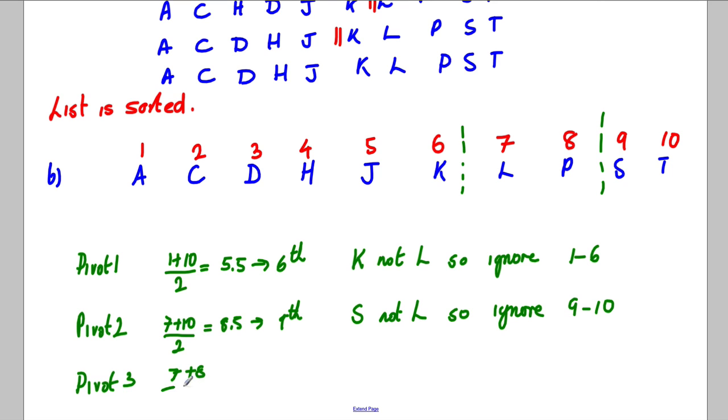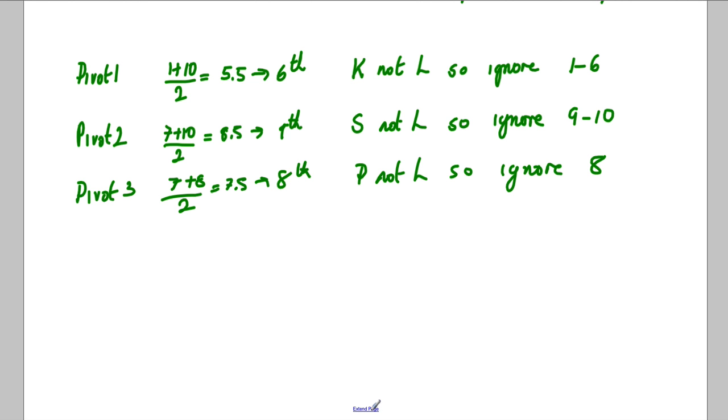So we're just with these now. Pivot three: we're going to do seven add eight divided by two, which is seven point five, which is the eighth person. The eighth is P, not L, so ignore eight. And lastly, the fourth pivot is going to be where we find it. Pivot four: I always just write seven add seven over two, which is clearly the seventh, and we write L is located.